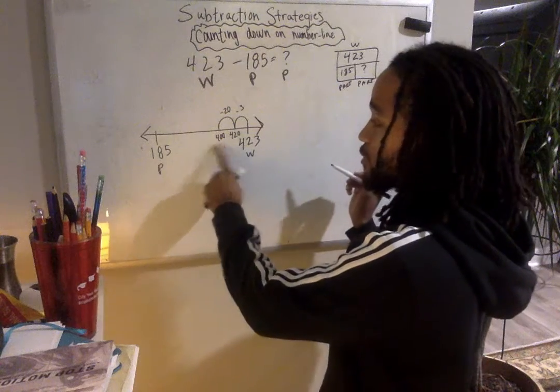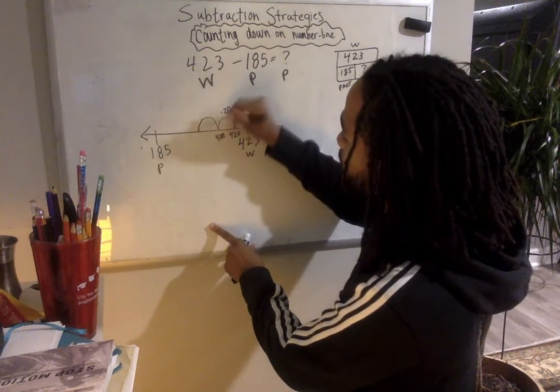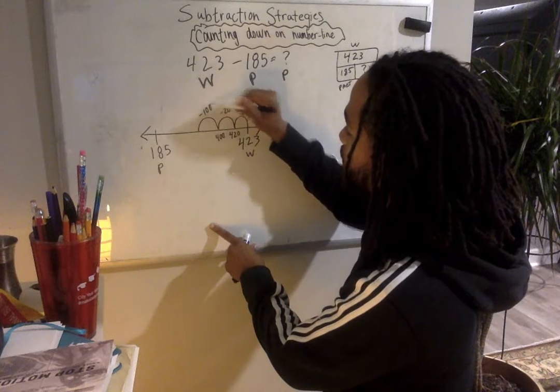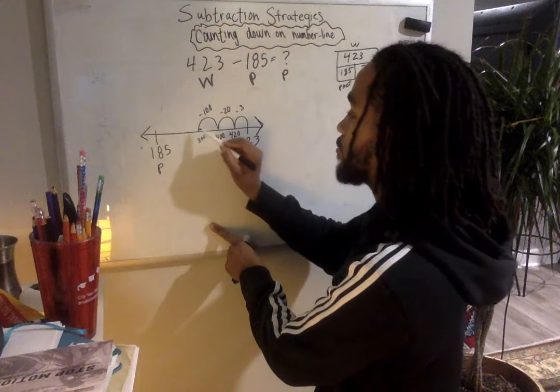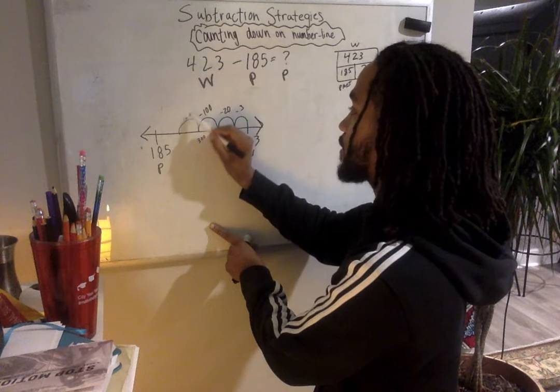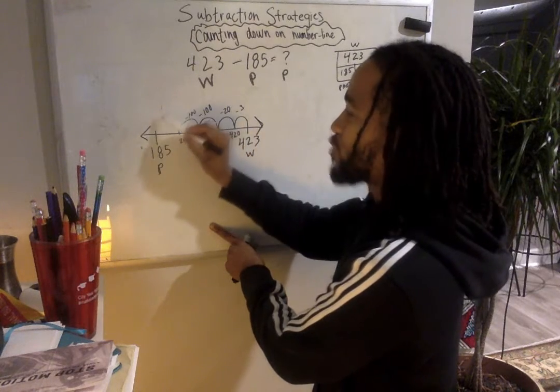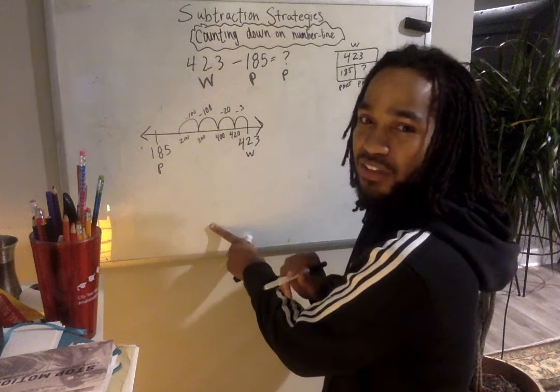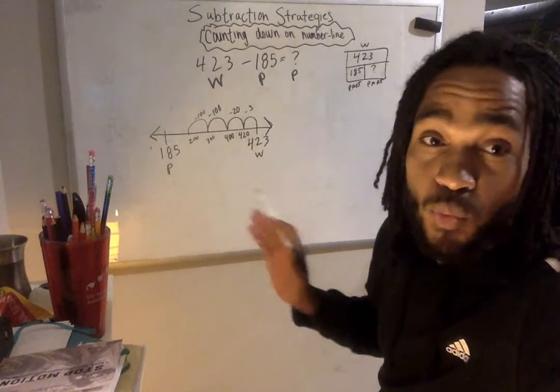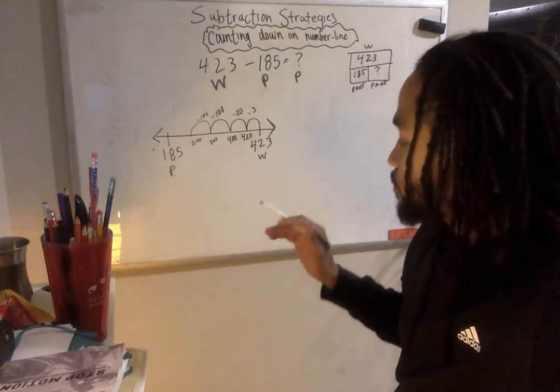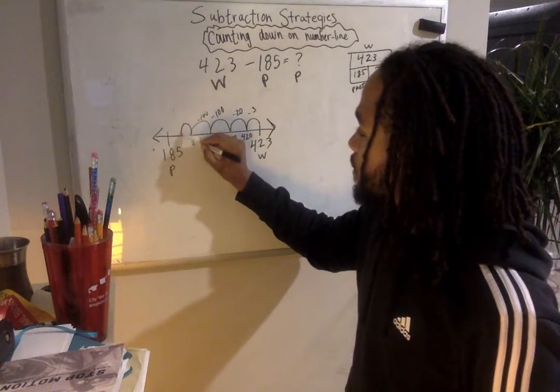So I'm at 400. I have to get to 185. I'm going to subtract 100 to get to 300. I'm getting closer to 185. I'm going to subtract another 100 to get to 200. If I subtracted another 100, it would get me to 100, which is way too far. So what I'm going to do, I'm going to subtract a 10.